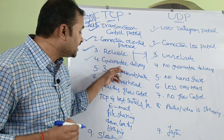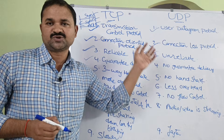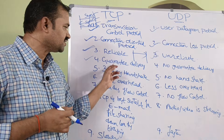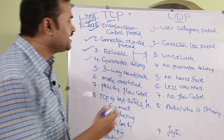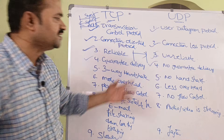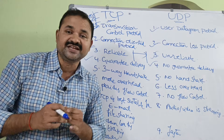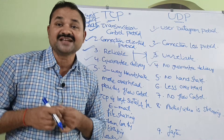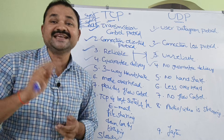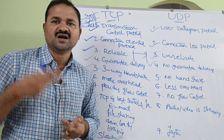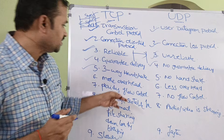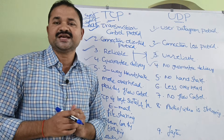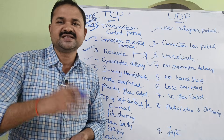TCP ensures guaranteed delivery — the segments sent by the sender will arrive at the receiver correctly. Whereas UDP provides no guarantee about delivery. TCP uses a three-way handshake procedure, using three segments for establishing or terminating a connection. Whereas in UDP, there are no handshake procedures. There is no need for any connection between the sender and the receiver; if the sender knows the receiver's port number, it can directly send the segment.